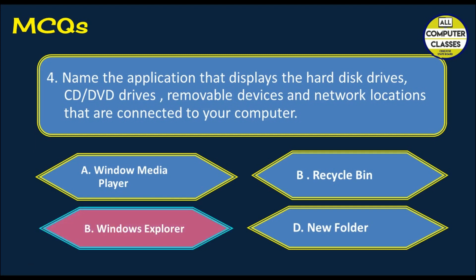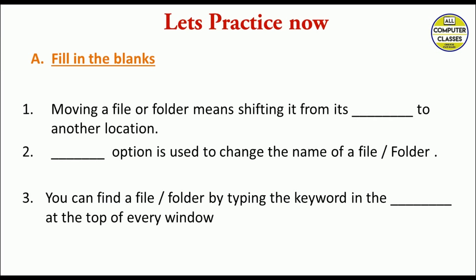Next we have fill in the blanks. The first one is moving a file or a folder means shifting it from its dash to another location. So the answer is source location, means the main location. Dash option is used to change the name of a file and folder. It's rename. Changing the name means renaming. You can find a file or folder by typing the keyword in dash at the top of every window. It is search box.